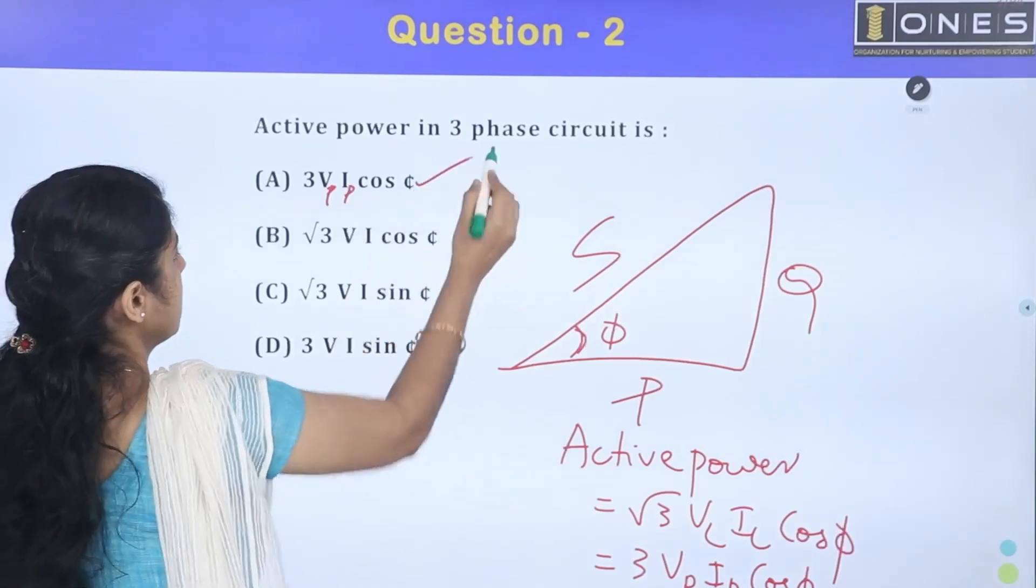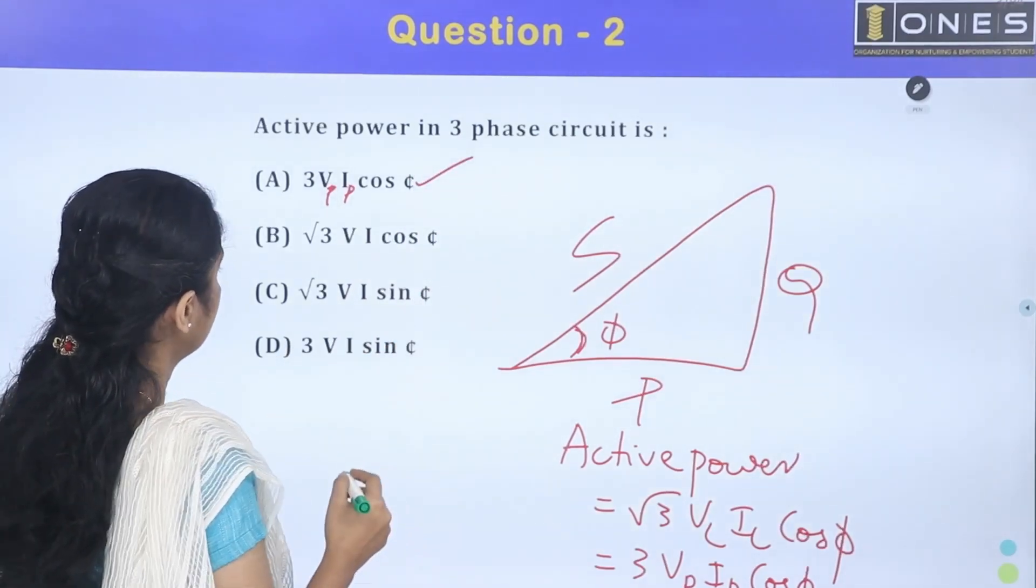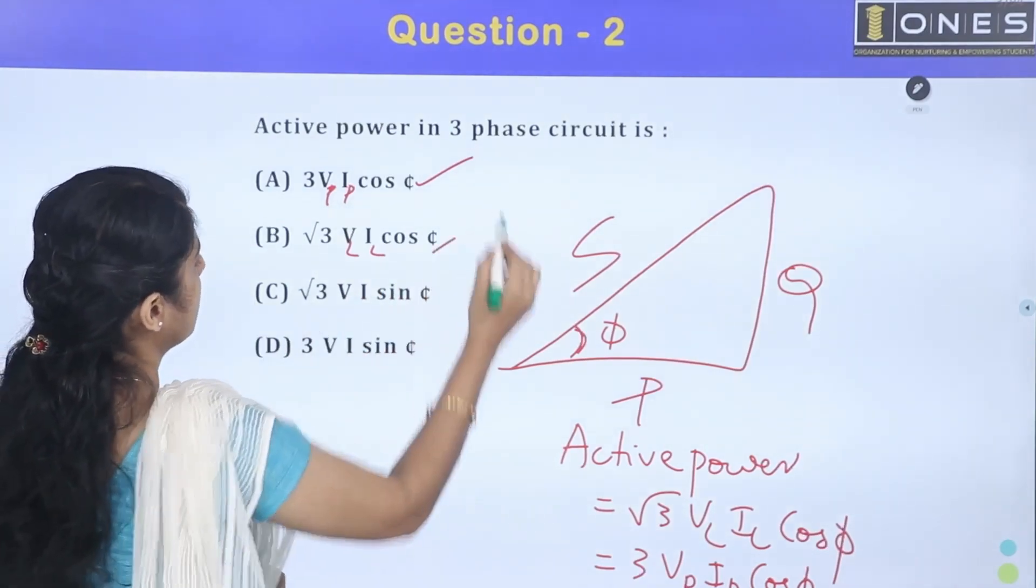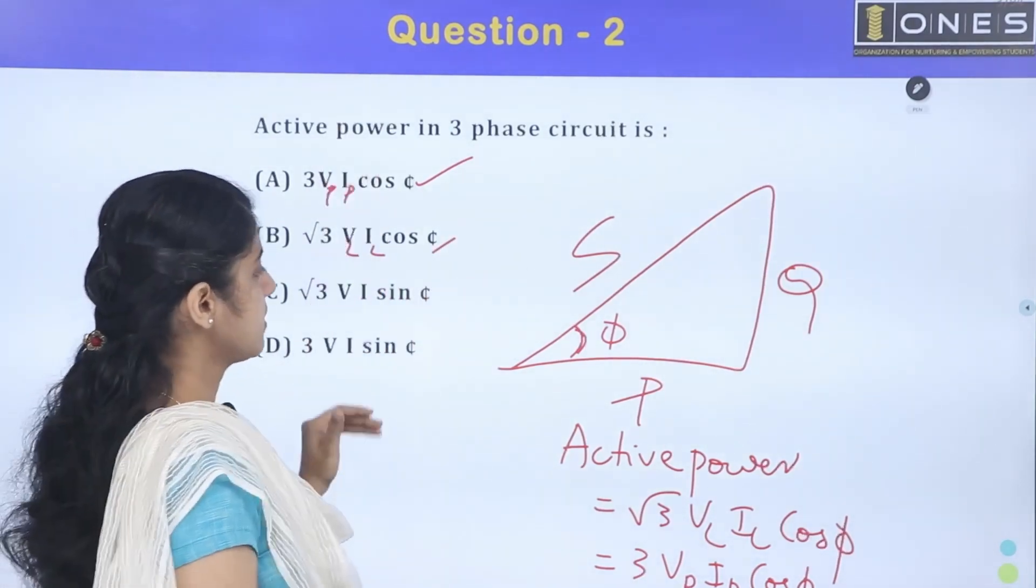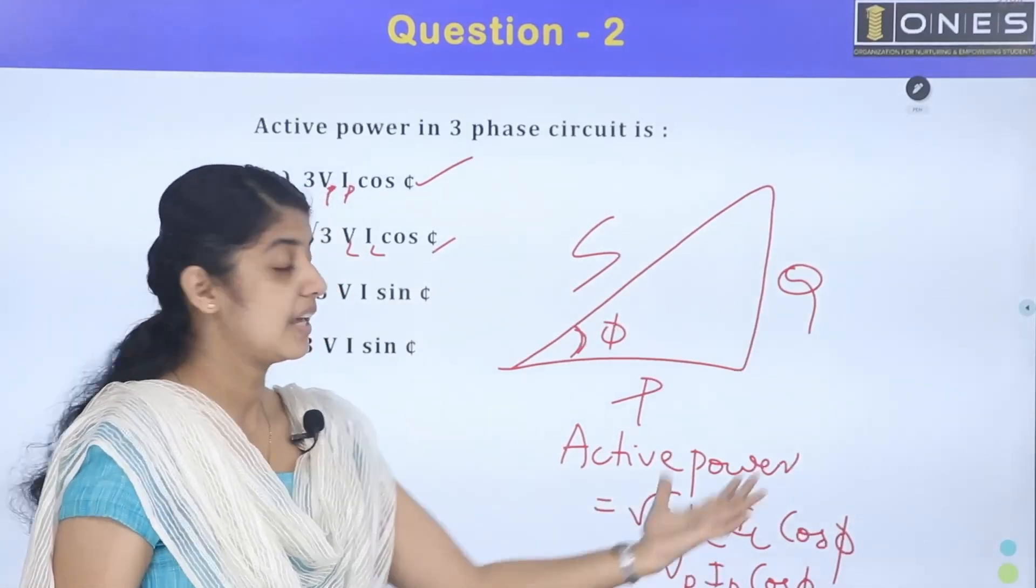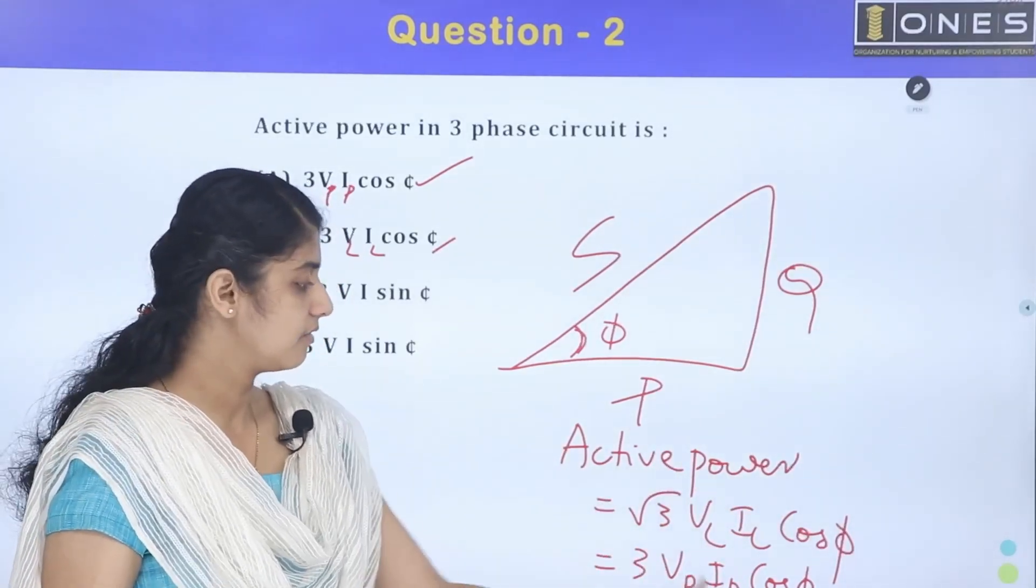For line value we write root 3 VL IL cos phi. Active power is root 3 VL IL cos phi, which equals 3 VP IP when using phase values.